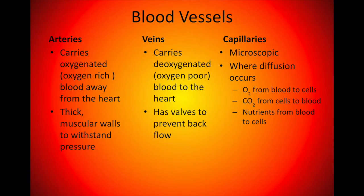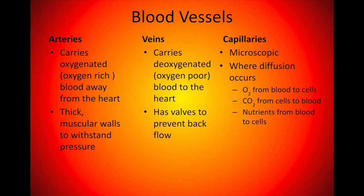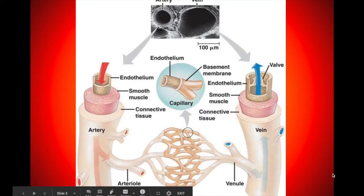The last type of blood vessel is capillaries — microscopic blood vessels found all over your body. This is where most of your diffusion occurs. Oxygen diffuses from the blood to the cells, and CO2 diffuses from the cells to the blood during the process of cellular respiration, or making energy. You need to get oxygen into your cells to make energy, and get excess carbon dioxide out. Nutrients like glucose also diffuse from the blood into the cells to produce ATP.